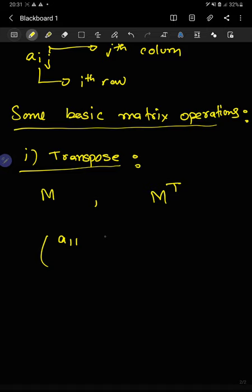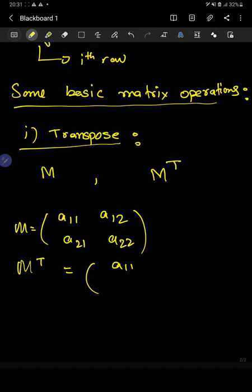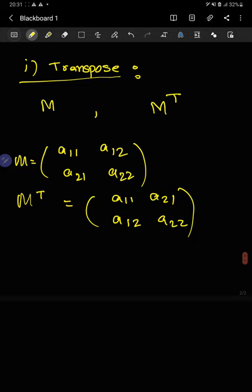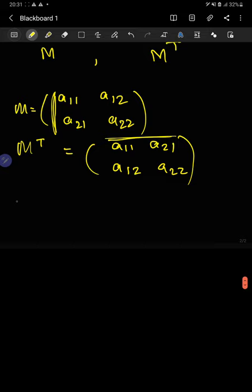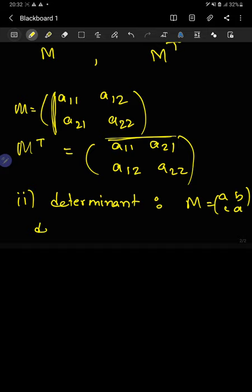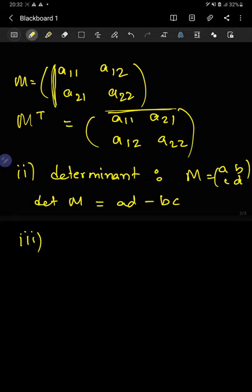If you have the elements written out, M transpose would look something like this — I interchanged the rows and the columns; it's just taking a row and putting it in the column. The second operation is the determinant. It's basically defined for a matrix M with entries a, b, c, d, and the determinant would look something like this. Almost all of you have dealt with determinants before, so I won't waste much time on this.